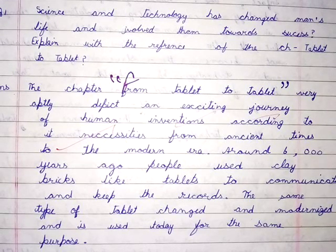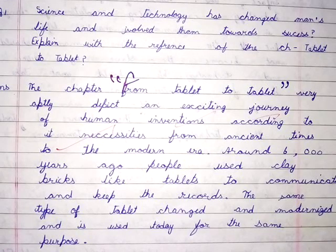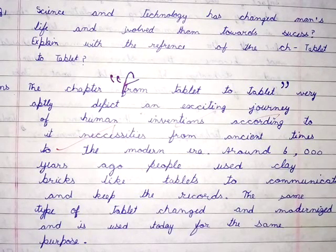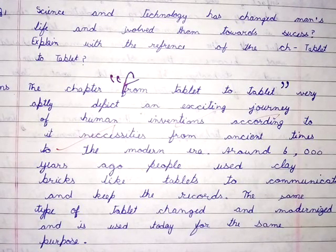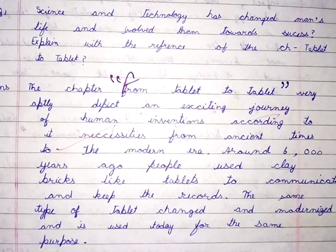The chapter From Tablet to Tablet very aptly depicts an exciting journey of human inventions according to its necessities from ancient times to the modern era. Around 6,000 years ago, people used clay bricks like tablets to communicate and keep their records. The same type of tablet changed and modernized and is used today for the same purpose.